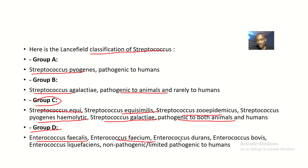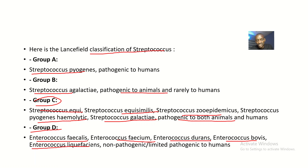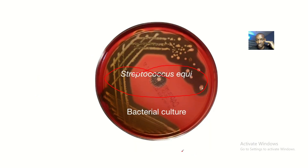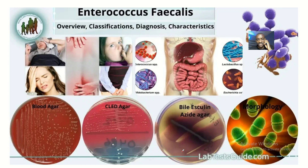In Group D we have Enterococcus faecalis, Enterococcus faecium, Enterococcus durans, Enterococcus bovis, and Enterococcus liquefaciens. All of these are either non-pathogenic or have limited pathogenicity toward humans.